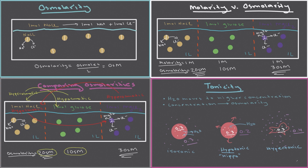So this is tonicity. Isotonic means the solution has no effect on the cell. Hypotonic means the solution causes the cell to gain water. Hypertonic means the solution pulls water from the cell, causing it to shrivel up. We'll use these facts in later videos to understand important clinical applications, such as how different intravenous fluids affect your cells' health.